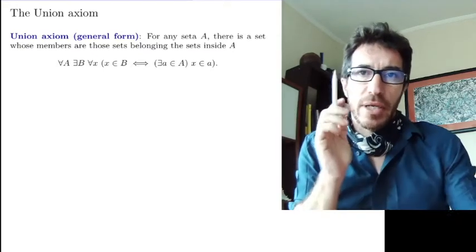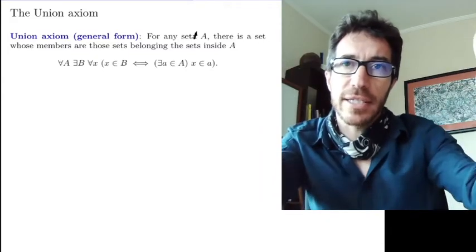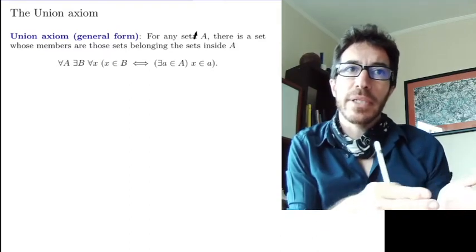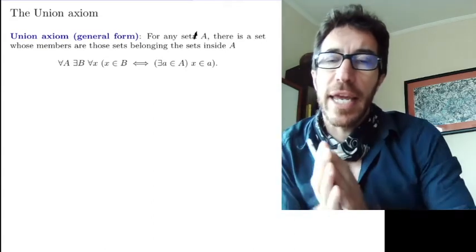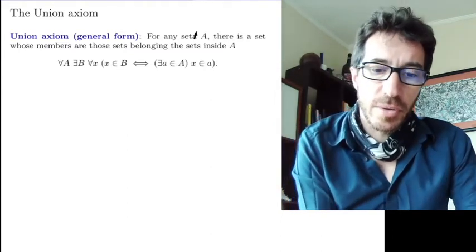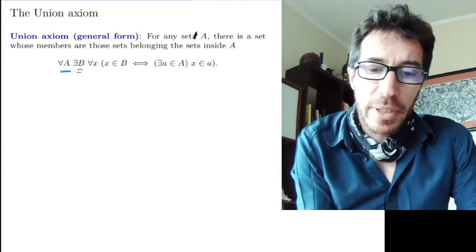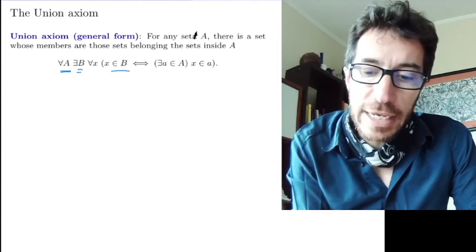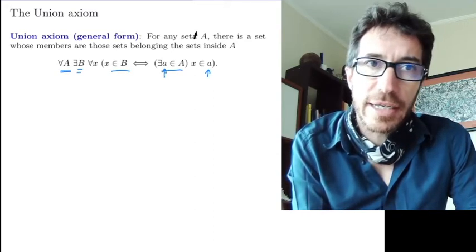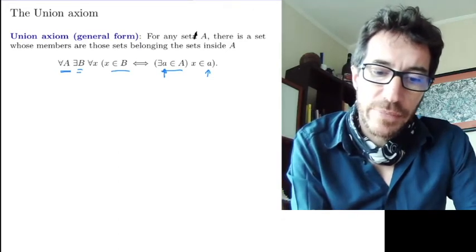So this is what the general form says. If you have a set A, think of this set A as a set that contains sets, and we want to union those sets together. The axiom says that given such a set, there is another set whose members are those belonging to the sets inside A. So we're unioning all the sets that are inside A. Given the set A, we can find the set B that we call the union, whose members are all the x's that belong to some little a that belongs to capital A. These little a's are the sets that are members of A, and we look at the x's that are inside those, and we put them all together inside one set that we call B.